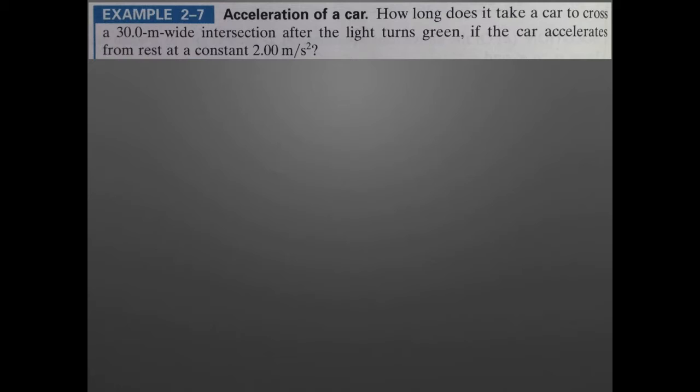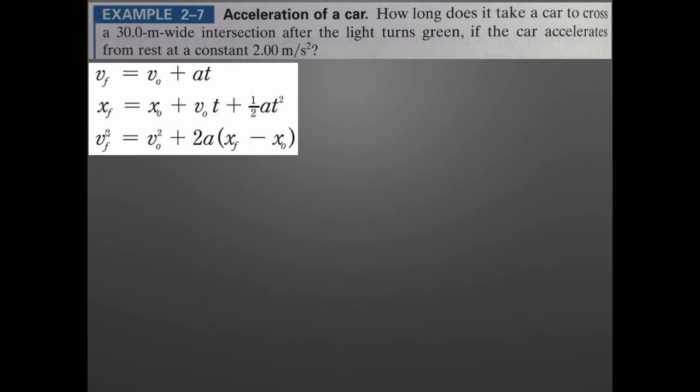Last simple problem in this set. How long does it take a car to cross a 30-meter-wide intersection after the light turns green if the car accelerates from rest at a constant 2 meters per second squared? We are looking at a question asking us how long. How long is different than how far. How long is about time. Let's make our list of given and wanted quantities first. We're given the length of the intersection, 30 meters. So the initial position is 0 meters and the final position is 30.